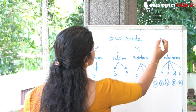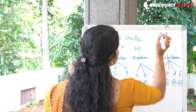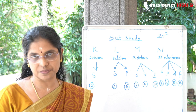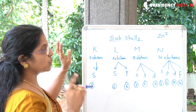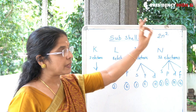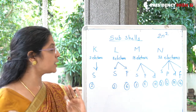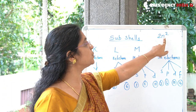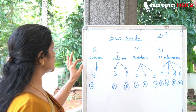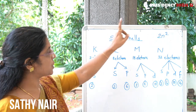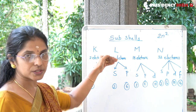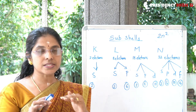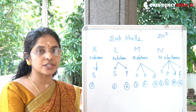The formula for the number of electrons in a shell is 2n², where n is the number of the orbit. For the K shell (n=1), the maximum electrons = 2×1² = 2. For L shell: 8 electrons. For M shell: 18 electrons. For N shell: 32 electrons.